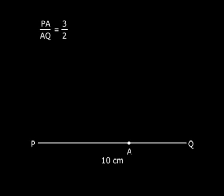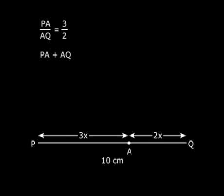I know that the point A divides the line segment PQ in the ratio 3 is to 2. So I can take PA as 3X and AQ as 2X, but PQ is given as 10 cm which means PA plus AQ